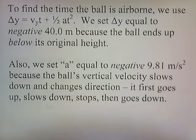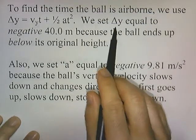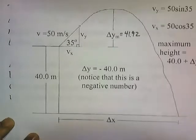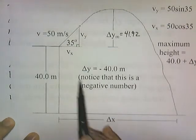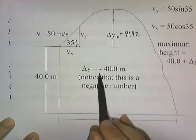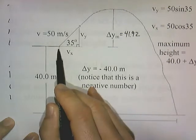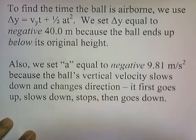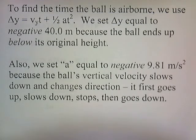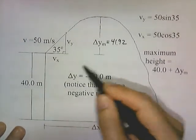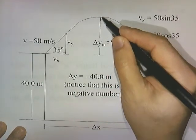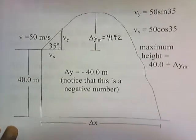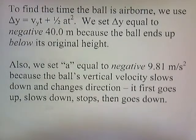To find the time the ball is airborne, we use delta y equals Vy·t plus one-half a·t squared. We set delta y equal to negative 40 because the ball ends up below its original height — it starts at the cliff edge and ends 40 meters lower, so the change in direction was downward. We also set a equal to negative 9.81 meters per second squared because the ball's vertical velocity first goes up, slows down, stops, then changes direction and comes back down faster and faster. We use negative acceleration any time something slows down and/or changes direction.